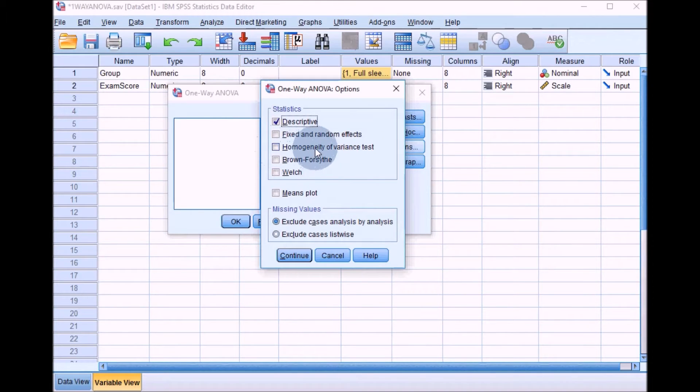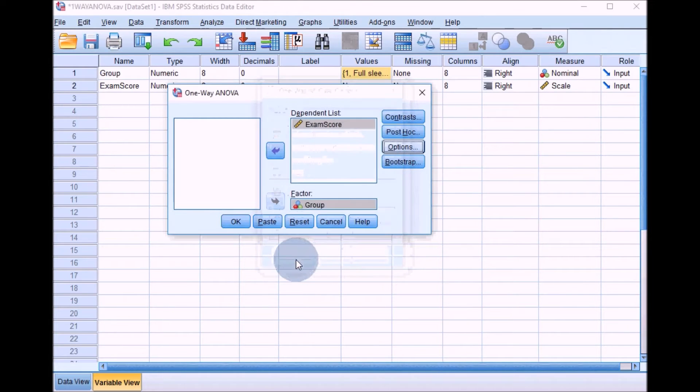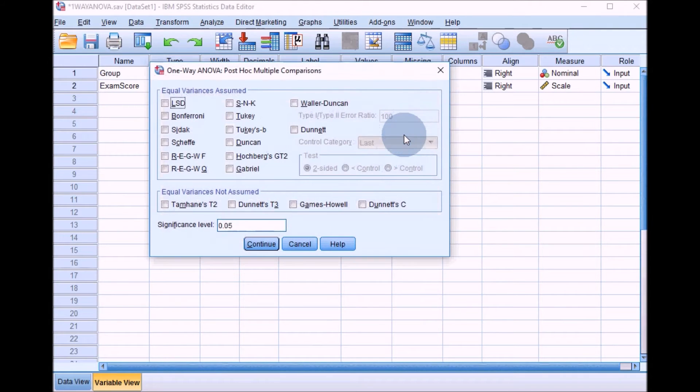We'll choose descriptive statistics as we want to look at the mean scores, the Levene's test which is the homogeneity of variance test, and then we'll select these two as well - Brown-Forsythe and Welch. These are statistics you'd use if the Levene's test was significant. Like a t-test, you just use alternative statistics. We can click on continue.